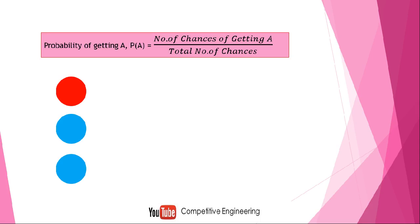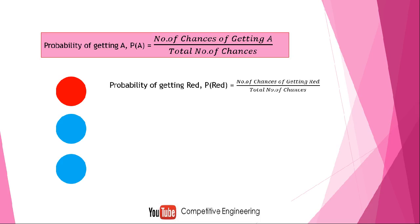I will explain it with an example. There are three balls: two blue balls and one red ball. The probability of getting a red ball — we write it as P(red) — equals the number of chances of getting red divided by the total number of chances. What do we mean by number of chances of getting red? I am going to take one ball at a time, so how many possibilities are there?